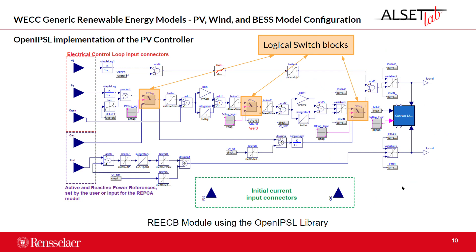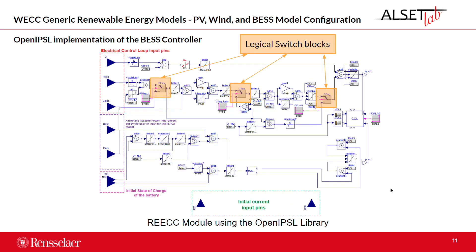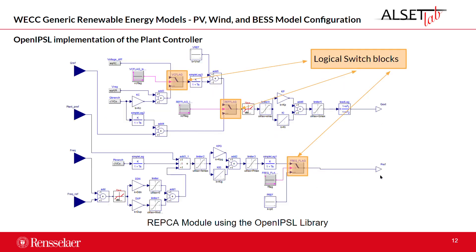This slide shows the electrical controller of the PV and the wind; you can use the same electrical controller for both representations. The orange squares represent logical switching blocks: by changing the Boolean value of a switching block, it will be either opened or closed, representing different control configurations. This is an example of the electrical controller of the battery energy storage system; the main difference is that this component has an initial state of charge of the battery. Finally, we have the REPCA module, also implemented in the OpenAPSL library, which performs the plant controller function of the models.